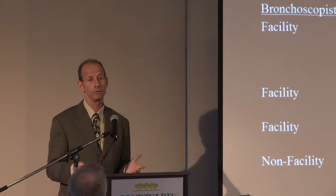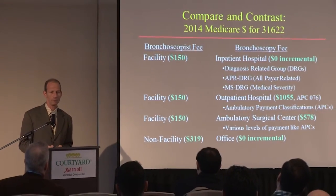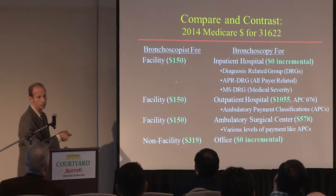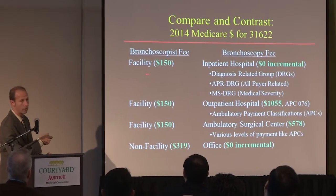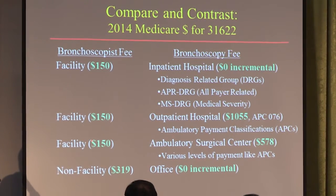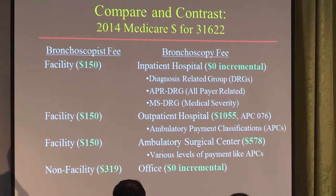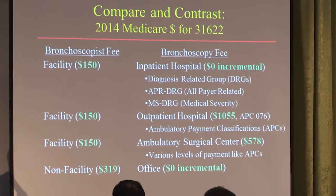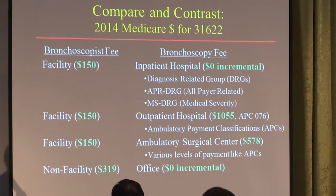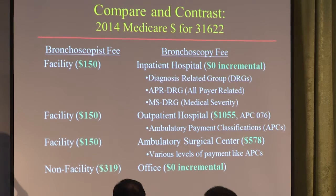In all of these different settings, there's a technical fee and there's a bronchoscopist's professional fee. For the basic look-see bronch, the 31622, if you're the bronchoscopist you get paid $150 — whether it's on an inpatient, a hospital outpatient, or done in an ambulatory surgery center. If it's a hospital inpatient, the hospital gets paid nothing for the technical fee. The DRG for a respiratory diagnosis is what they get, whether the patient gets zero bronchs, one bronch, or five bronchs — the hospital gets no incremental revenue.